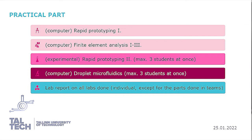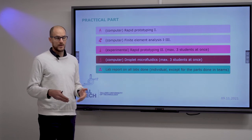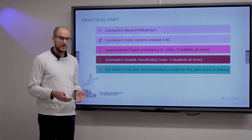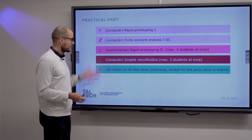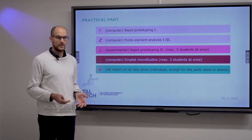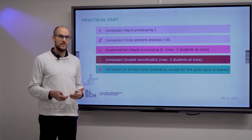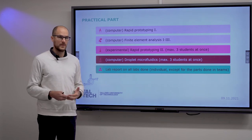These are the main modules in the practical part. There is rapid prototyping, where you will design and 3D print a microfluidic chip. Then three classes of finite element modeling — two on computational fluid dynamics and one on thermal analysis. There is also an experimental class where you test a microfluidic chip, do validation, and learn about practical 3D printing. Finally, there is a class on droplet microfluidics where you do image analysis of droplet populations. At the end you must write a lab report containing all of your reports on each individual exercise.